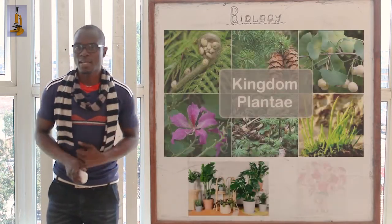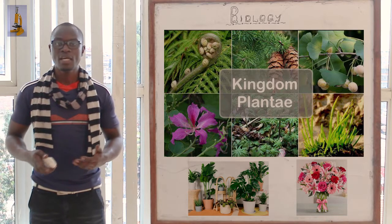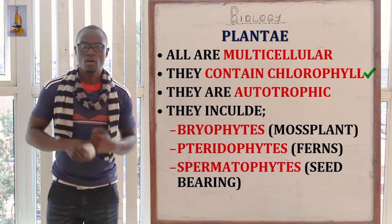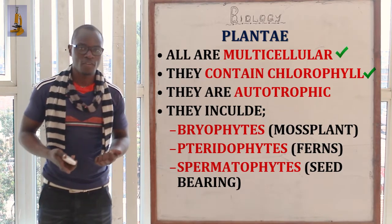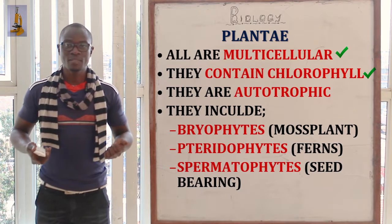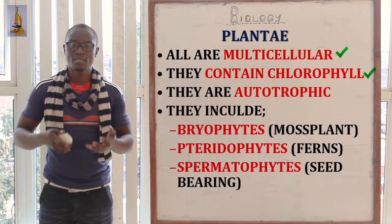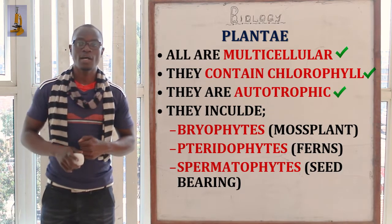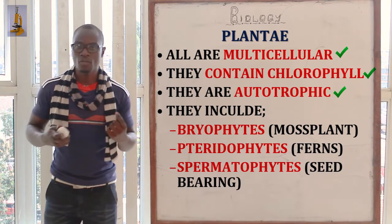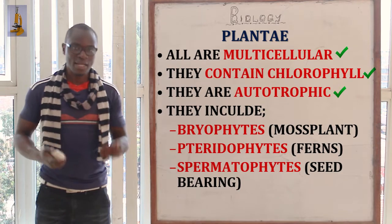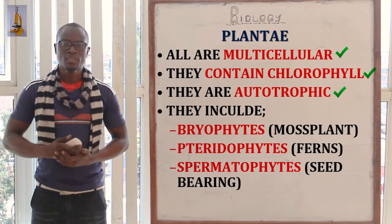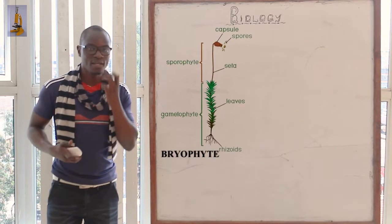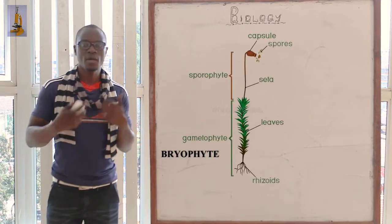Let's look at kingdom Plantae. Kingdom Plantae comprises of all the plants. These organisms are mainly multicellular. They contain chlorophyll, which is the agent by which plants make food. Organisms under kingdom Plantae are also autotrophic, meaning they make their own food using simple materials — be it light or chemical materials in the environment. These organisms include division Bryophyta, which comprises most plants.